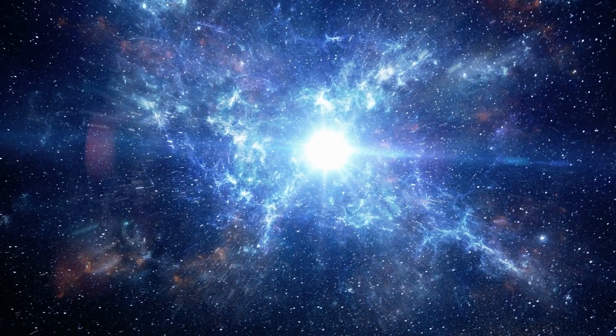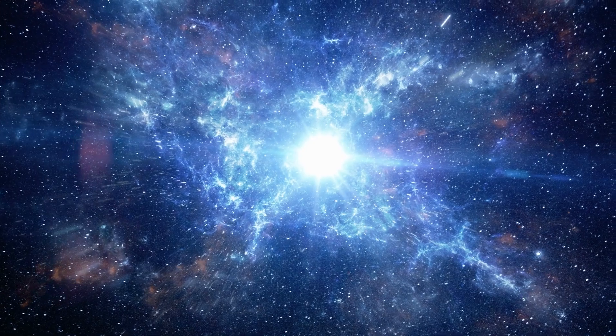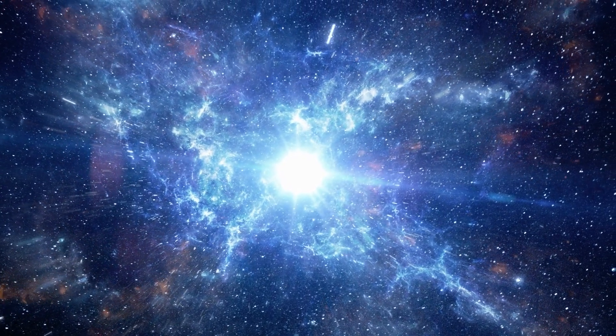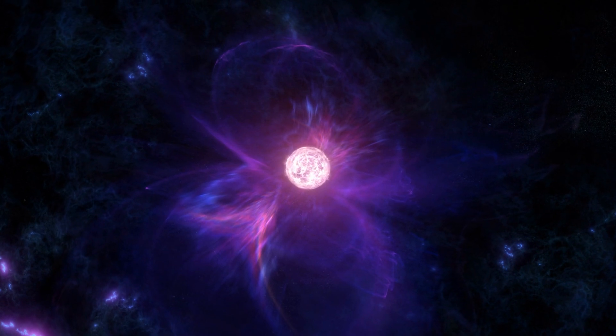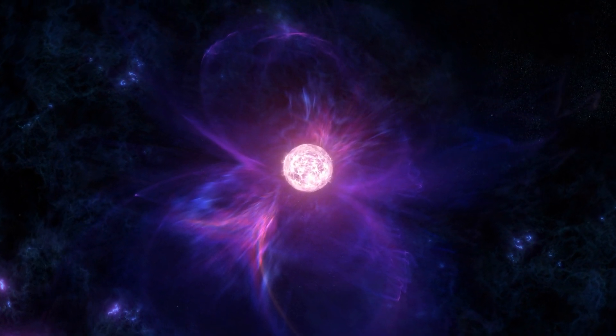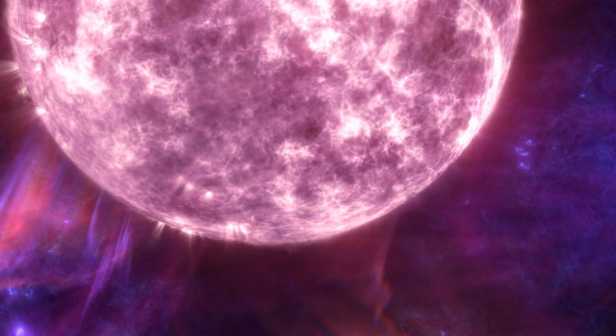The first stars, known as population 3 stars, were formed about 100 million years after the Big Bang. These stars were massive, with masses ranging from tens to thousands of solar masses, and they were extremely bright.